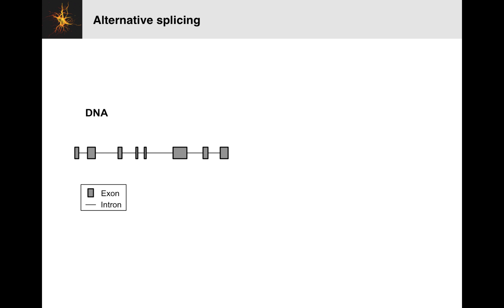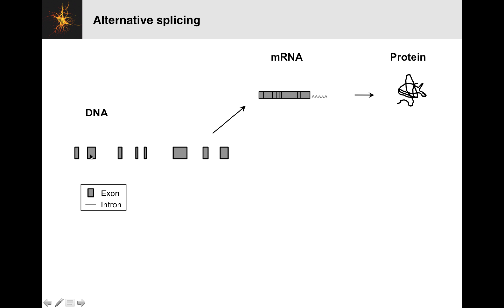Let's start out by reminding ourselves what splicing looks like. Here we have a piece of DNA, shown as boxes and lines. That doesn't mean if you looked at this DNA you'd notice any differences — it's the same chemical molecule. We're just using boxes and lines as humans to differentiate these different regions. The boxes indicate the exons that after DNA transcription and splicing will be included in the final mRNA, which will then undergo translation to make a protein.